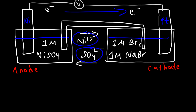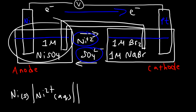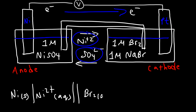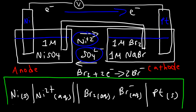For the cell notation going from anode to cathode: the nickel electrode (solid) is separated by a single vertical line from Ni 2+ in aqueous phase. A double vertical line separates the two half cells. On the right side we have Br2 in the aqueous phase and bromide (Br−), since bromine is the reactant and bromide is the product at the cathode. Then a single vertical line separates the aqueous phase from the platinum electrode. That is the cell notation for this example.